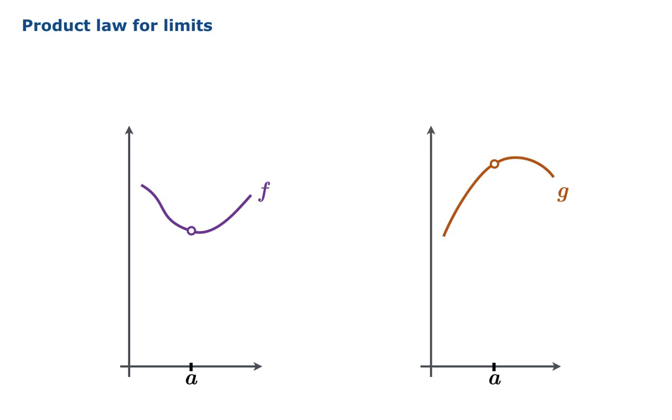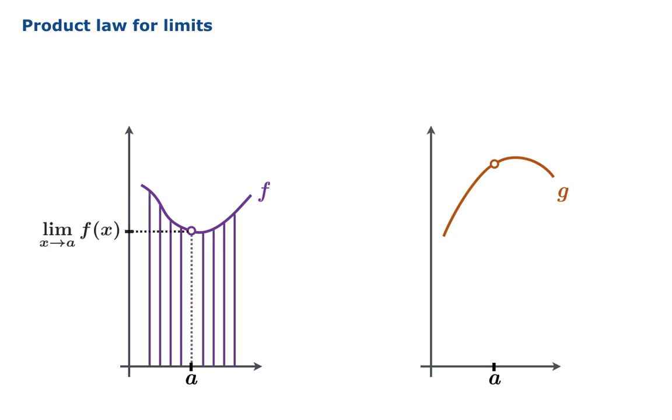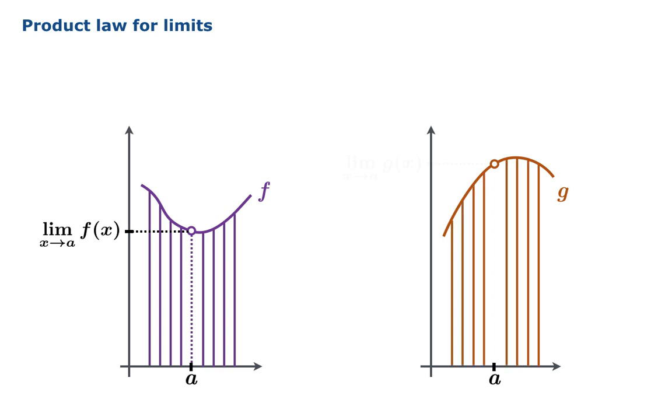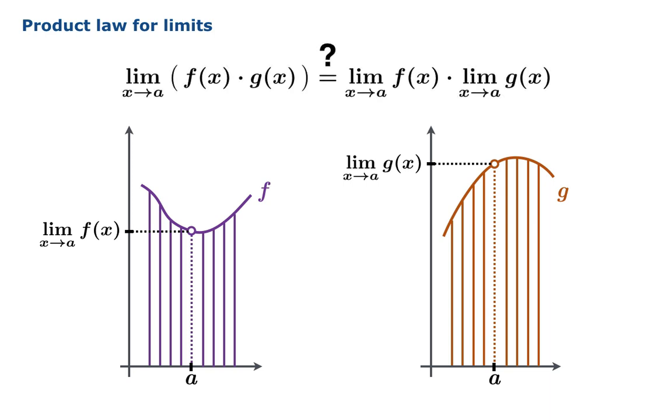Before we end, we're going to examine one more critical law of limits, and that is a product law for limits. Our question is this. If we know the limiting values of functions f and g as x approaches a, what is the limiting value of the product f times g as x approaches a? At this point, it seems reasonable to expect that the product of the limit is equal to the limit of the products. What we'd like to do is to construct a geometric argument that makes this result plausible.